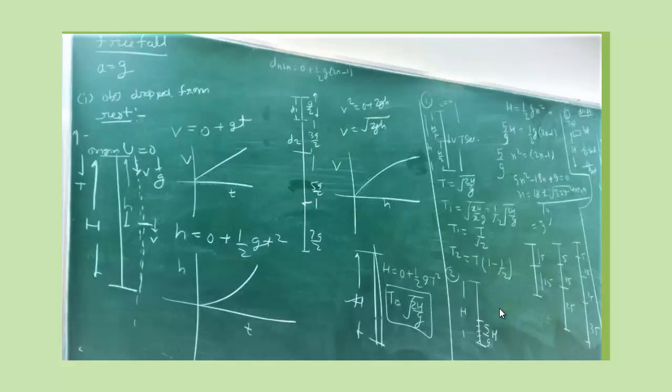We are discussing this page. We have put V is equal to U plus AT, S equals UT plus half AT squared. We have made a graph of acceleration constant, VT graph, straight line and displacement time. We have made a parabola.